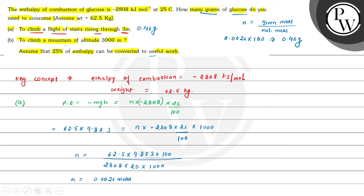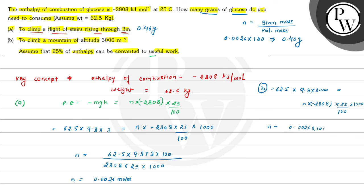Now we calculate for Part B: to climb a mountain of altitude 3000 meters. We apply the same formula; only the height is changed. Mass is 62.5 kg multiplied by 9.8 multiplied by 3000. This equals number of moles multiplied by 2808, which is a negative value, multiplied by 25 divided by 100, and multiplied by 1000 to convert to joules. The number of moles comes out to be 0.0026 multiplied by 1000, which equals 2.6 moles.